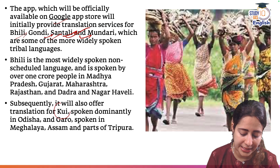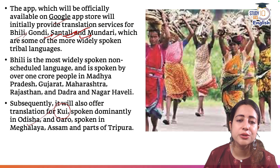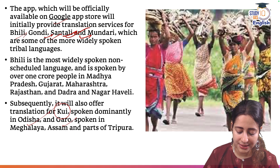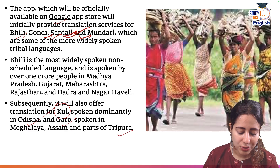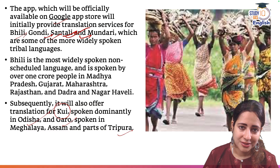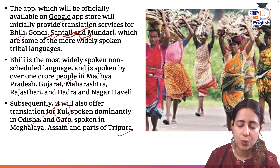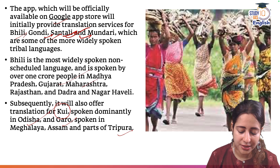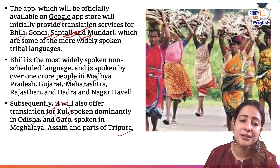For example, there is the language called Kui, predominantly used in Odisha. Then we have the Garo language, very common in Meghalaya, Assam, and parts of Tripura, even certain belts of Mizoram. The government wants to promote better translation of languages like Bheeli, Gondhi, Santhali, Kui, and Garo because these are widespread among people of Madhya Pradesh, Jharkhand, Maharashtra, Gujarat, Rajasthan, and Dadra and Nagar Haveli.